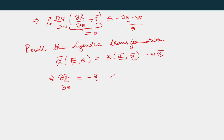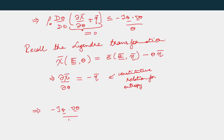What we've identified here is a constitutive relation for the entropy. Our inequality finally reduces to the following form: minus J q dotted with grad theta divided by theta is greater than or equal to zero.